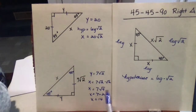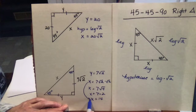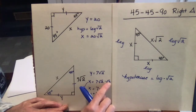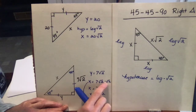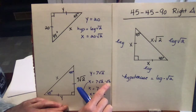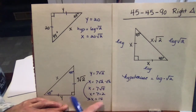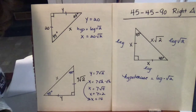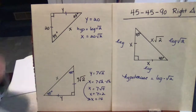Another way to do it more quickly: any radical times itself equals the radicand, which is the number underneath the radical. So 7 times 2 gives us 14 directly. As you go through these problems, you'll get faster at simplifying square roots.